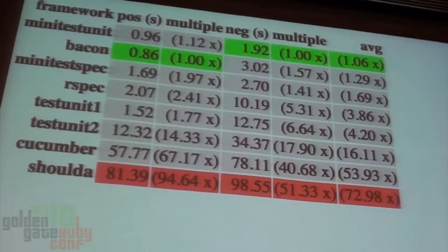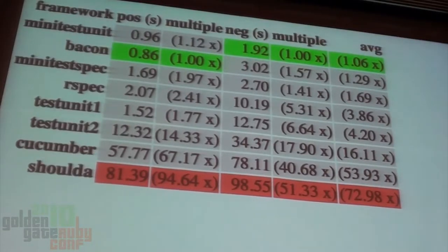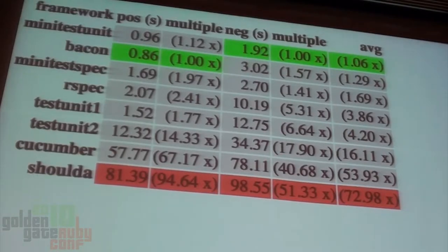Here are the benchmarks — Ryan can tell you more about how they're calculated. I should point out that Shoulda is slow because of a bug; its real performance is somewhere between Test Unit 1 and Test Unit 2. But looking at the top, MiniTest and Bacon are way faster — about 200% faster than most other frameworks. That's actually more important than you might think when you're running a large test suite. BearTest wasn't tested because I didn't tell Ryan about my talk in advance, so I don't have numbers for it.